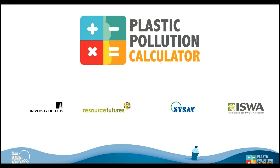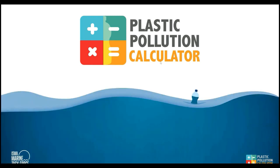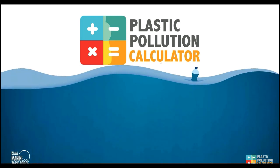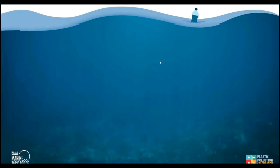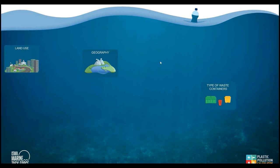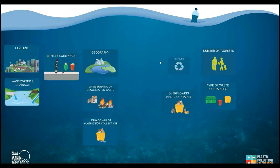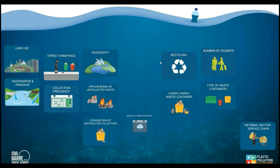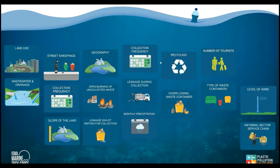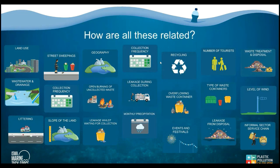So the Plastic Pollution Calculator. This is part of the USRA task force on marine litter and it's been developed by the University of Leeds, Resource Futures, and ISRA. We believe this is the most comprehensive tool to date in terms of quantifying plastic pollution sources, pathways, and the eventual fate. When we're talking about plastic pollution, there are a lot of different factors that contribute to understanding where it's coming from, and the calculator tries to combine all of these factors.